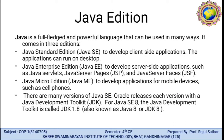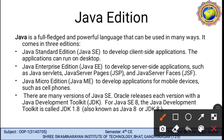Java is a fully-fledged and powerful language that can be used in many ways. It comes in three editions. First, Java SE — Standard Edition. Second, Java EE — Enterprise Edition. And Java ME — Micro Edition, as well as later versions covering JavaFX. Java Standard Edition is used to develop client-side applications that run on desktop machines. Java Enterprise Edition is used to develop server-side applications.